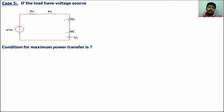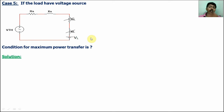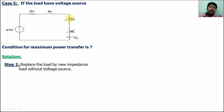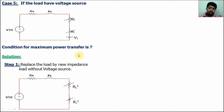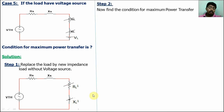Case 5 is a very important case not available in older textbooks, so listen carefully. The load has an impedance with an internal voltage source. Here is the procedure: Step 1 — replace the load impedance with its internal voltage source by a new impedance without the voltage source, giving RL' and XL'. Step 2 — for this new circuit, apply Case 2 to find maximum power transfer conditions: adjust XL' equal to minus XS so total reactance is zero, and RL' equal to RS. In this condition, the maximum power is transferred.